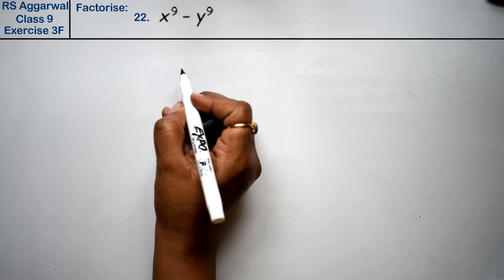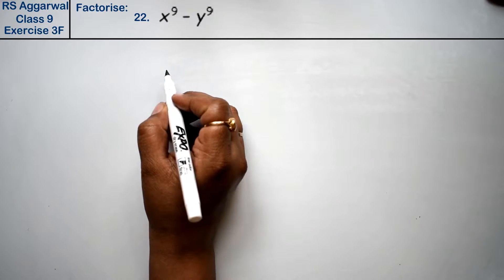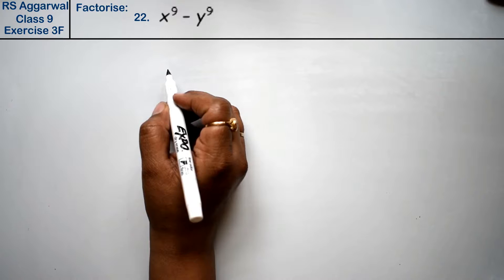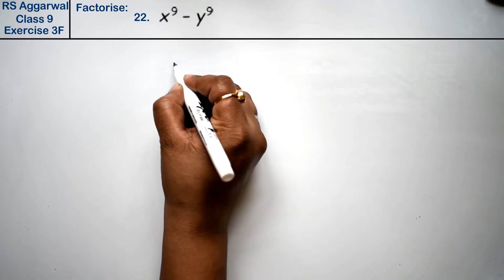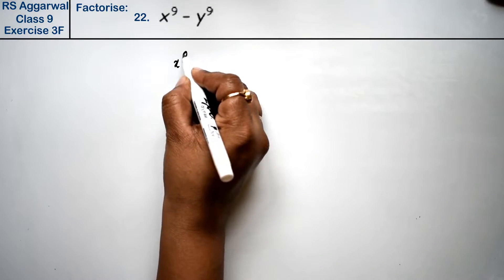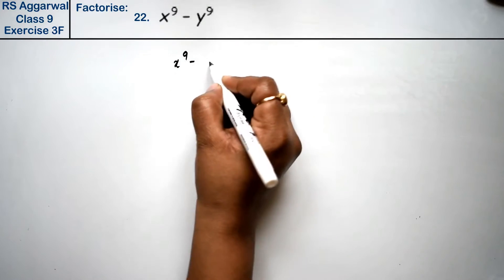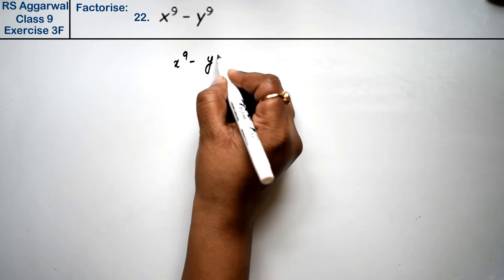Let's do question number 22 of exercise 3f, which is factorization. Question number 22 is x to the power 9 minus y to the power 9.